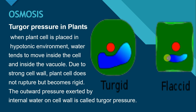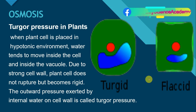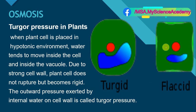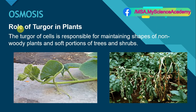That is opposite to the term flaccid. Cell flaccid us time pe ho ga jab cell se sara paani bahir ki taraf excrete ho jayega, and the vacuole and cell will lose water. So the cell will look flaccid. Role of turgid in plants: the turgidity of cells is responsible for maintaining shapes of non-woody plants and soft portion of trees and shrubs.